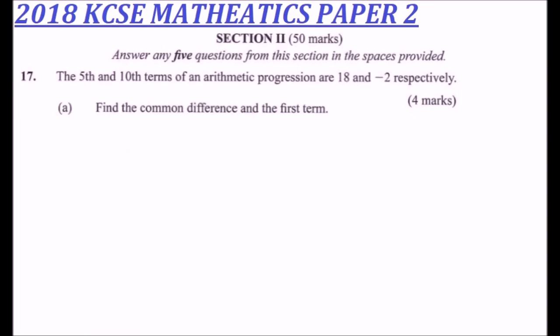This is Section 2 where you are supposed to earn yourself 50 marks. Out of the seven questions you have been given, you are required to answer five, but here we are going to answer all of them so that you understand how to go about it. Question number 17 is on sequences and series. We are told that the 5th term and the 10th term of an arithmetic progression are 18 and minus 2 respectively. Find the common difference and the first term.